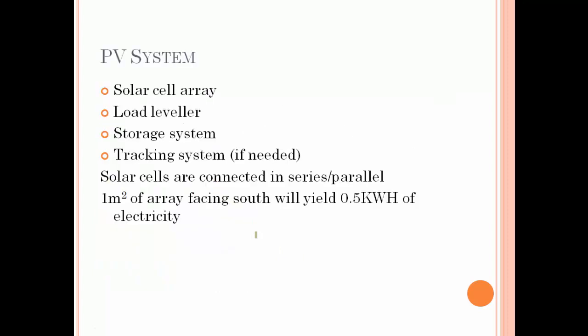The components of a PV system include: the solar cell array, load leveler, storage system, and tracking system. The tracking system is optional.